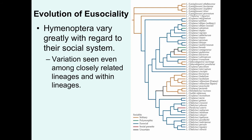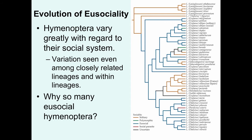Hymenoptera vary greatly with regard to their social system — not all Hymenoptera are eusocial. Even among closely related lineages there is variation. Looking at a phylogeny of one genus of bees, different colored branches relate to solitary nesting species, eusocial species (the blue branches, representing the largest number), and even polymorphic species (green lineages) where different populations within a single species show different degrees of sociality. This is fairly typical across Hymenoptera.